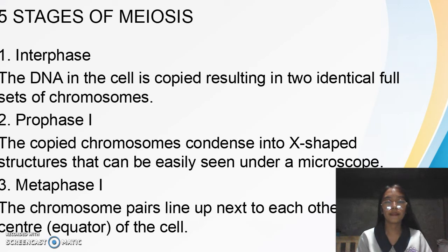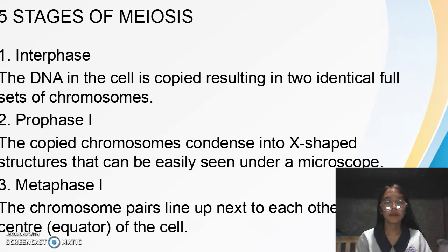Prophase 1: the copied chromosomes condense into X-shaped structures that can be easily seen under a microscope. Metaphase 1: the chromosomes pair up and line up next to each other along the center equator of the cell.